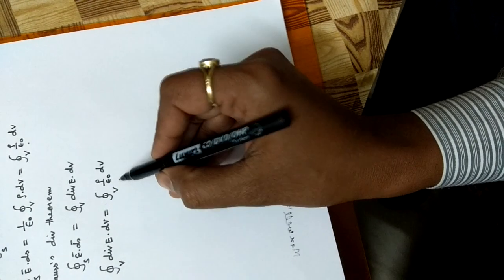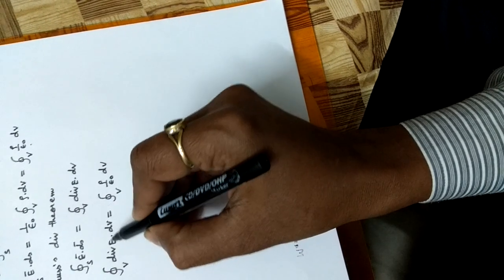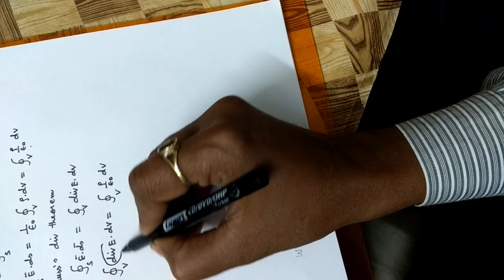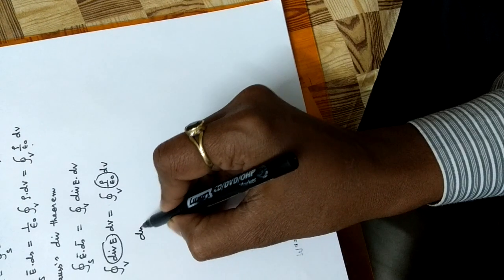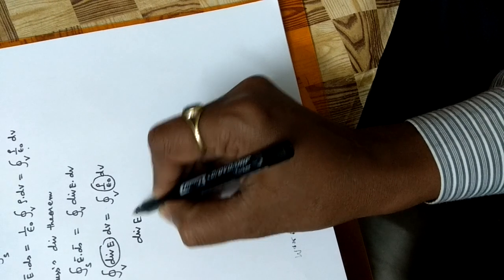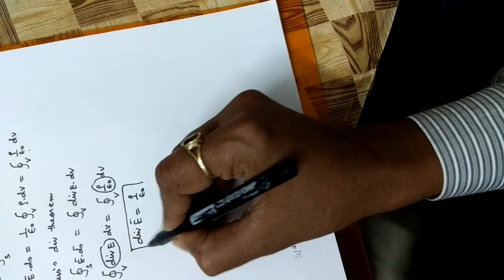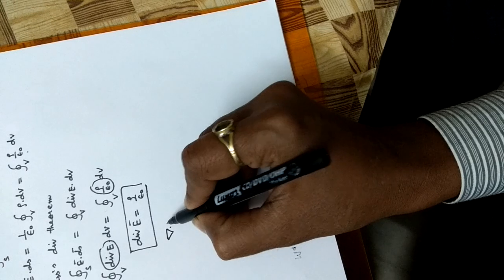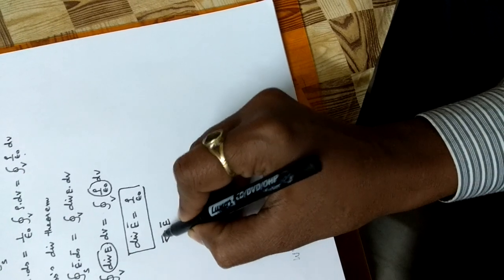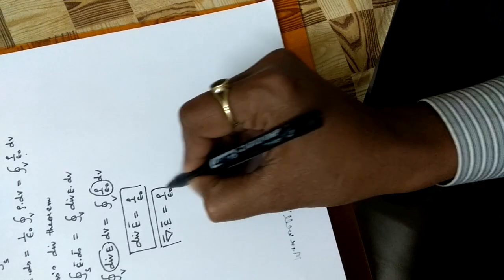Now on both sides it becomes volume integration and we can compare. After comparison, divergence E means del dot E equal to rho upon epsilon naught. This is the derivation of Maxwell's first equation.